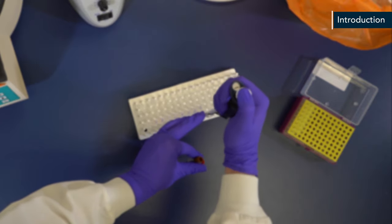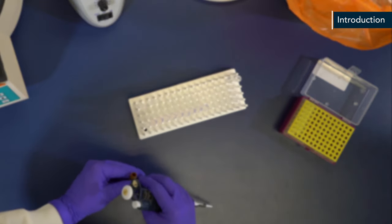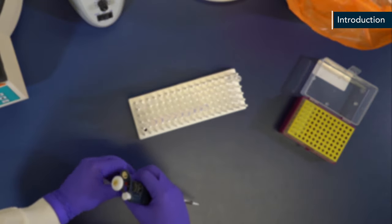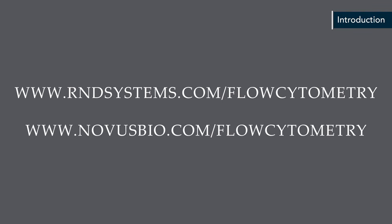Biotechni offers more than 87,000 antibodies as well as resources for flow cytometry through our brands R&D Systems and Novus Biologicals. Products and information can be found at rndsystems.com/flow-cytometry and novusbio.com/flow-cytometry.